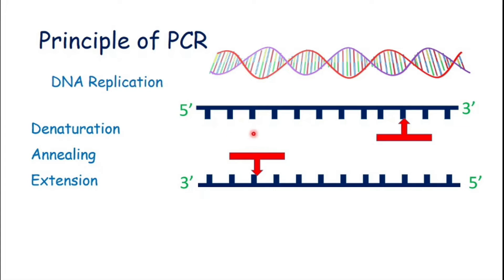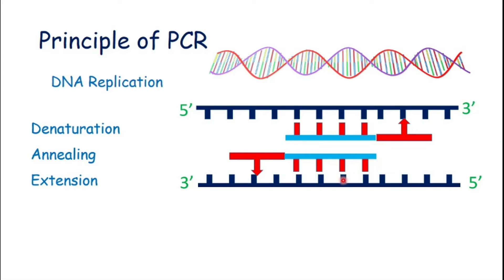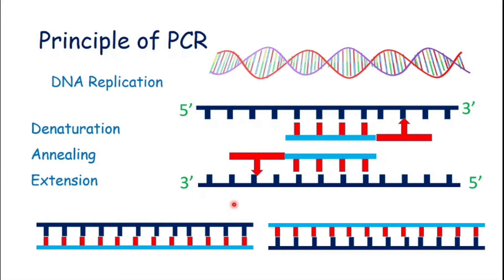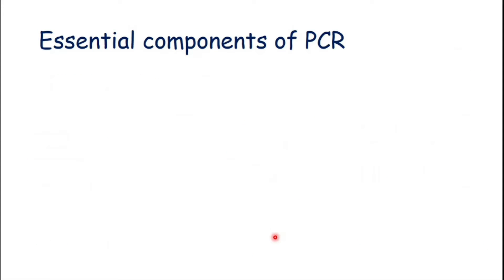In the third step, which is extension, DNA polymerase — which is Taq polymerase in the case of PCR — adds nucleotides to grow a new strand of DNA. At the end of this step, our first cycle of PCR is completed and we will get two copies of DNA.